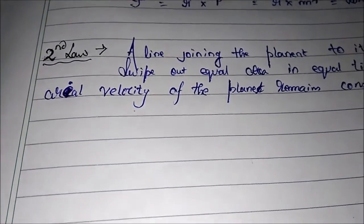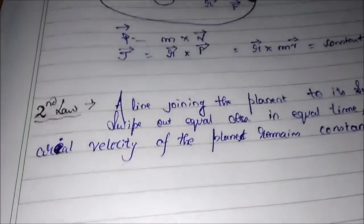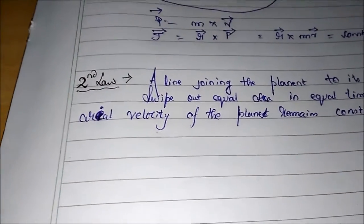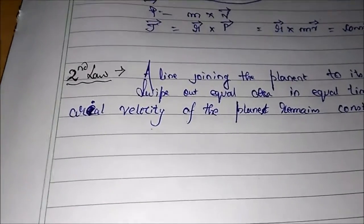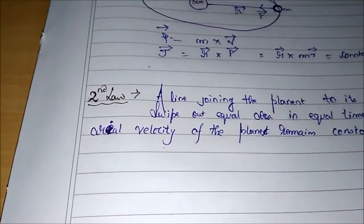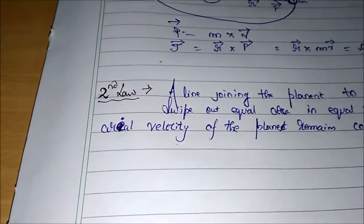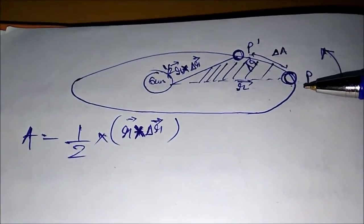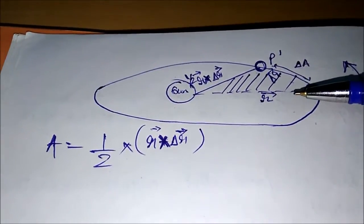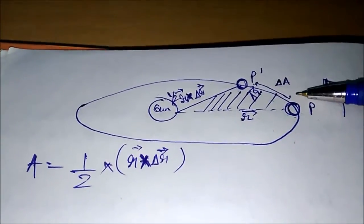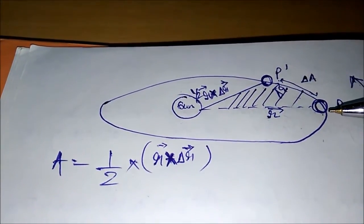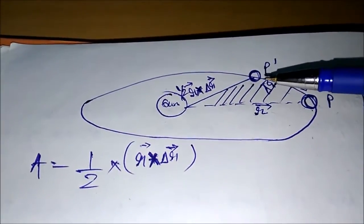The second law is called the Law of Areas. The law says that a line joining the planet to the Sun sweeps out equal area in equal time, meaning the areal velocity of the planet remains constant. In the diagram, the planet at point P is moving around the Sun. At any given instant the distance between the Sun and the planet is R. After some time delta T, the planet has moved a distance delta R, from P to P dash.